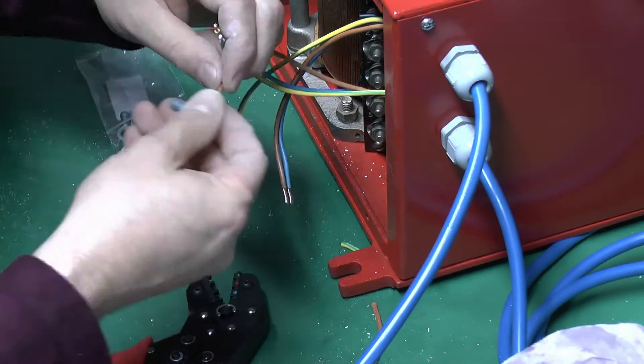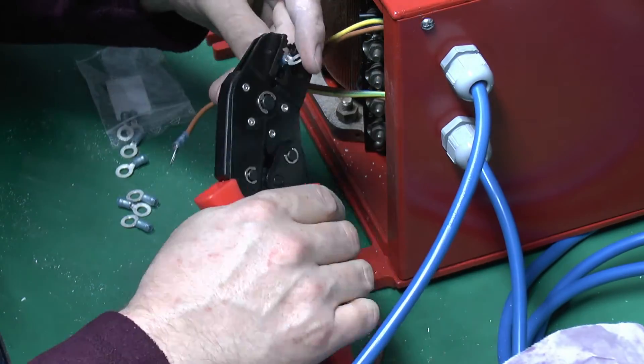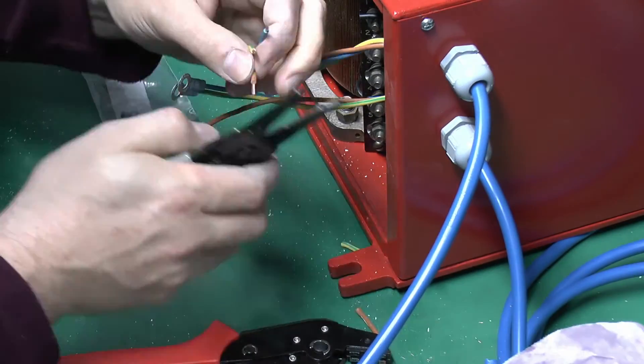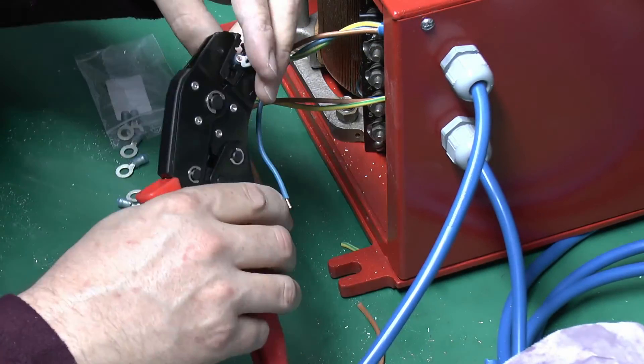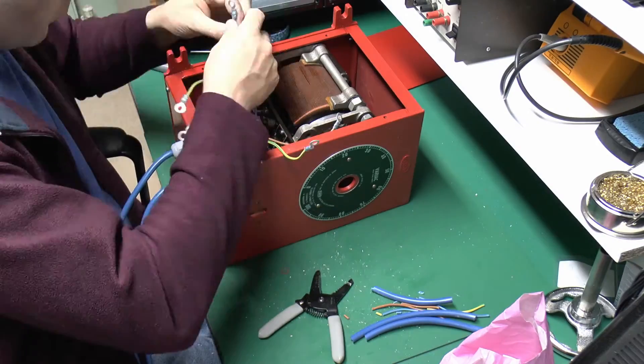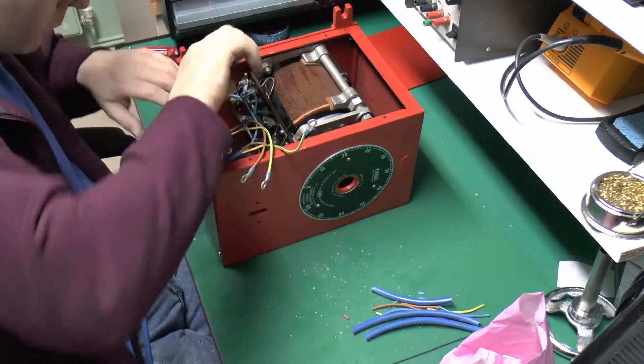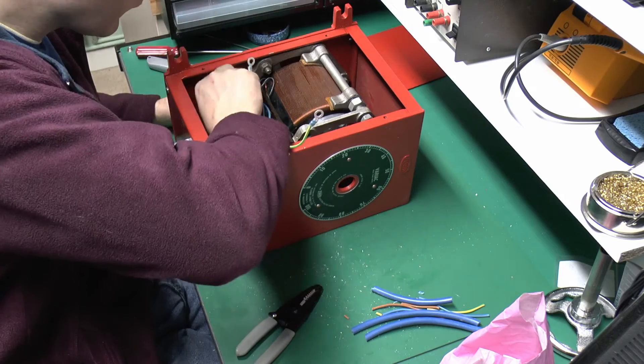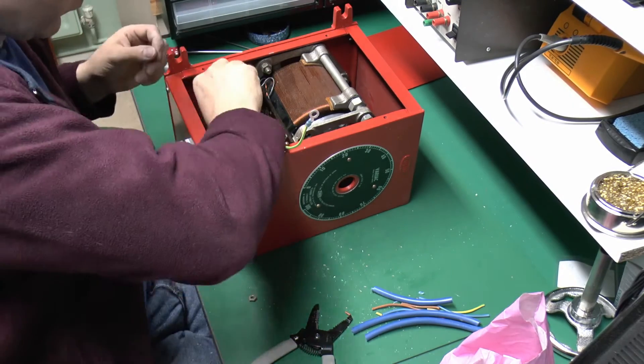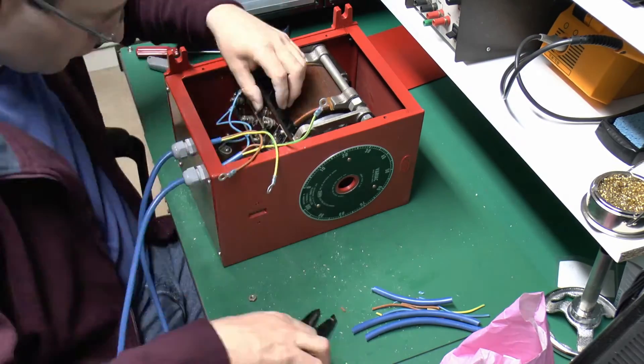Now just preparing the end of these wires, putting these crimped terminals on, just a matter of stripping the wire to the proper length, putting the terminal over and then crimping it with the proper crimping tool there. And now just going to try and fit them into the relevant terminals on the back there. I haven't done the switch on the top at this point. I'll actually do that later and that's just to involve cutting the line and neutral input wires and routing them to either side of the switch.